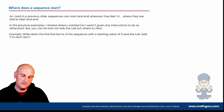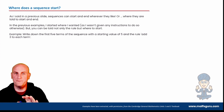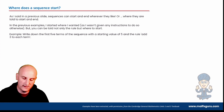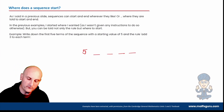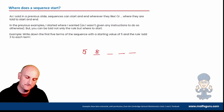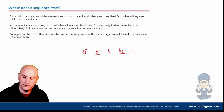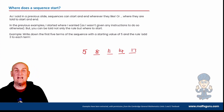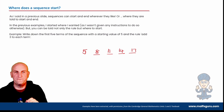Write down the first five terms of a sequence with a starting value of 5 and the rule: add 3 to each term. The starting value is my first number. I add 3 to get 8, add 3 to get 11, add 3 to get 14, add 3 to get 17. And that's where I stop. In exams, lots of people keep going — don't. The question states it only wants five terms: 5, 8, 11, 14, 17. Five numbers. Done.